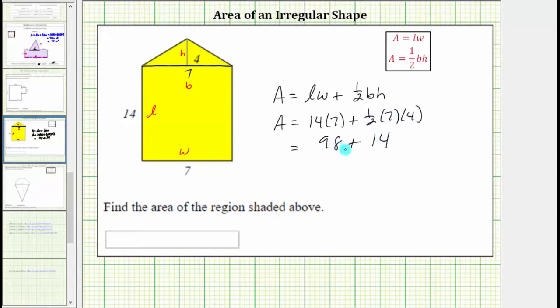The area is equal to 98 plus 14 square units, and 98 plus 14 equals 112. The area is 112 square units.